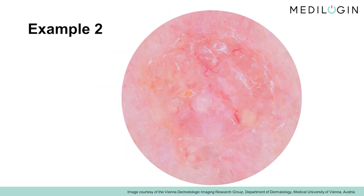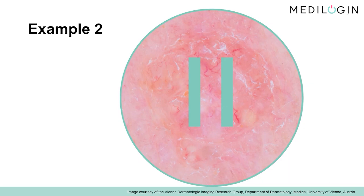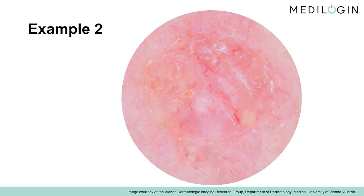Here you can see another example. Stop the video briefly and go through the most important criteria for the diagnosis. At first glance, you see an unpigmented, poorly defined lesion. As basal cell carcinoma-specific criteria, you can see polymorphic vessels crossing the center, as well as a structureless, orange-colored area and scalene. Therefore, the diagnosis is elementary: it is a basal cell carcinoma.